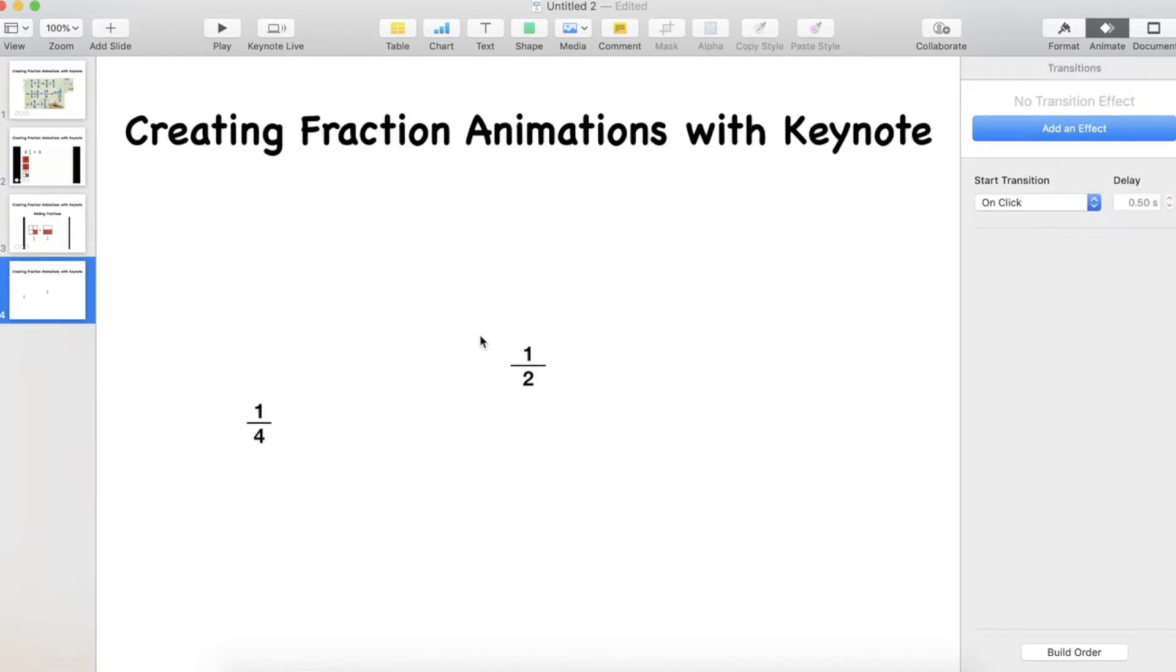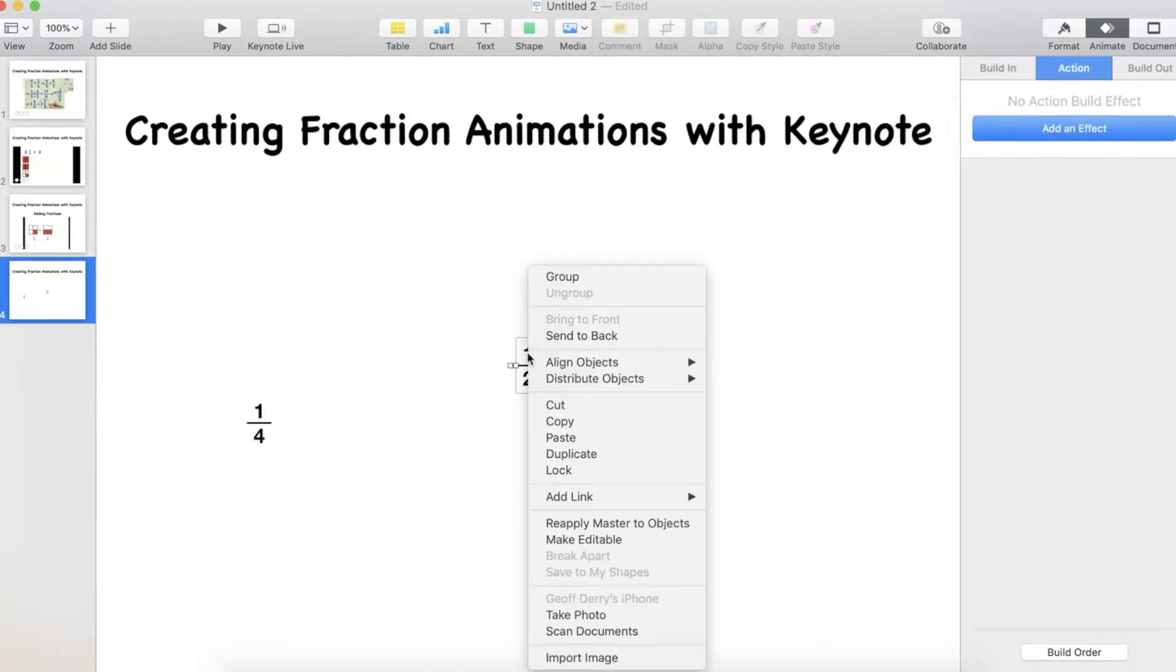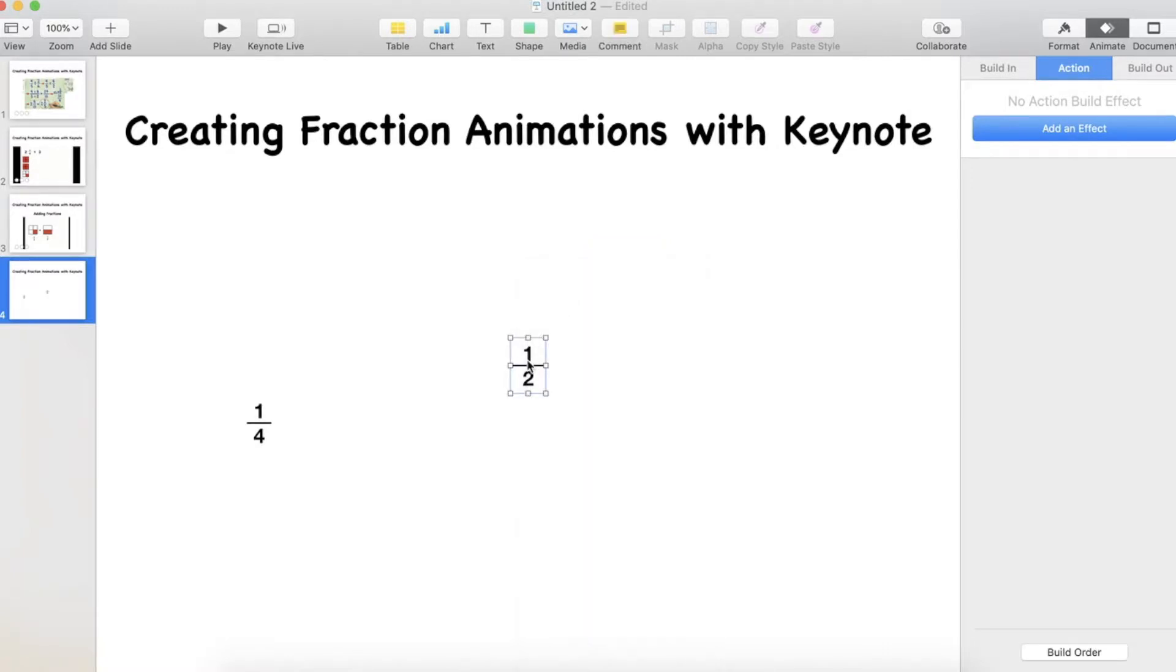So we just get that all lined up and then I'll select all the objects and right click and group them together so they stay together. I'll add another text box for my addition sign. So here we're going to add a quarter plus a half.